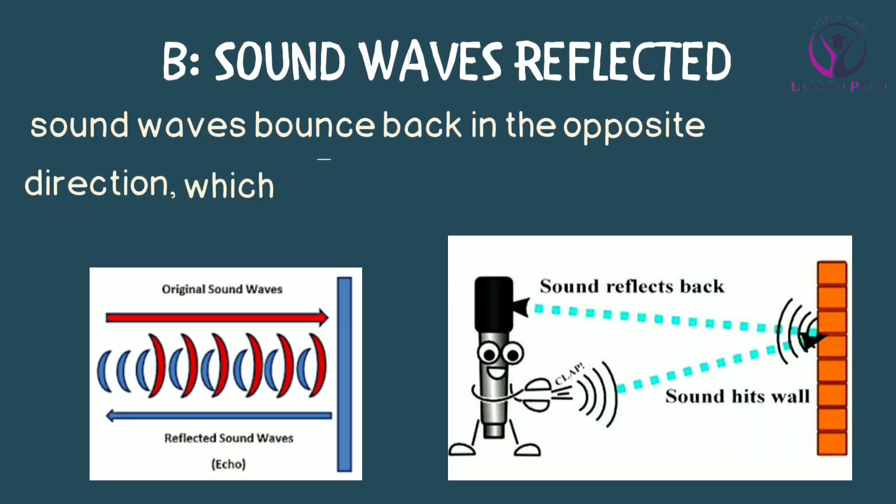On the other hand, sound waves can also be reflected by certain materials, such as hard surfaces like walls or floors. When sound waves are reflected, they bounce back in the opposite direction, which can create echoes or reverberations. This effect is often used in concert halls or music studios to create a more immersive sound experience.